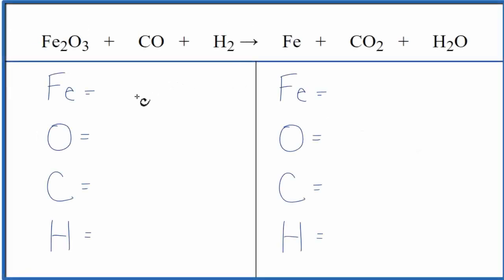This is kind of a long and complicated looking equation and we really won't be sure how difficult it is until we add all the atoms up. We have our Fe2O3 plus CO plus H2. So let's add the atoms up and see what we have.